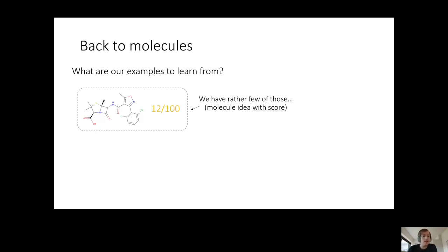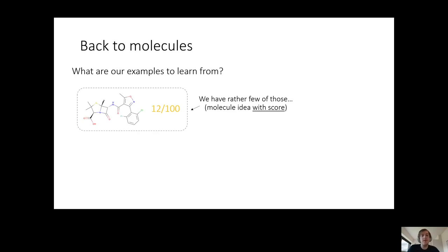The problem is that we don't have many such examples, because every such example involved taking a molecule idea and going to the chemists and biologists and waiting for them to give you a score. So we don't have that many of these examples, and we're going to need many, many of them if we want to make these programs learn.